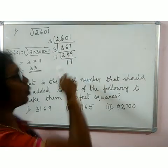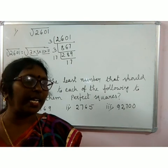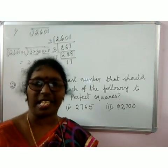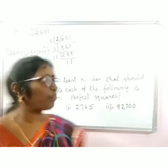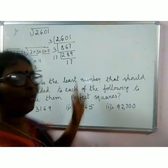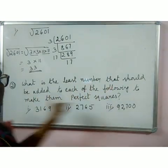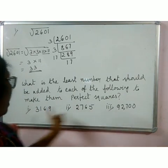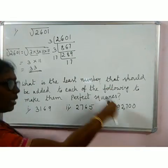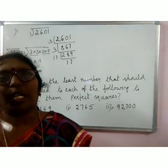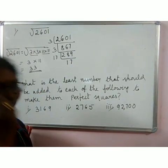This is how to find the square root of numbers by the prime factorization method. I already explained this while teaching the lesson; now before giving you the exercise, I am explaining again. With this, you can do question one. Now for question two: what is the least number that should be added to each of the following to make them perfect squares? These are not perfect squares — what least number should be added? I'll give you one more example.